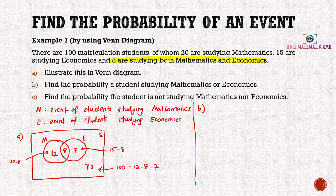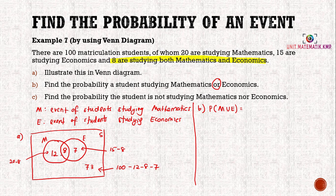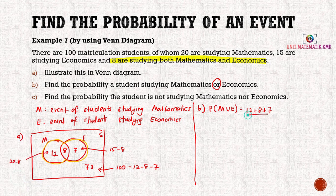Part b asks you to find the probability of a student studying mathematics or economics, so we need to find the probability of M union E. From the Venn diagram, the students studying mathematics or economics is 12 plus 8 plus 7, because 'or' means all elements in M and E. The probability is 27 divided by the sample space of 100, giving 27 over 100. You can give your answer as a fraction or decimal.